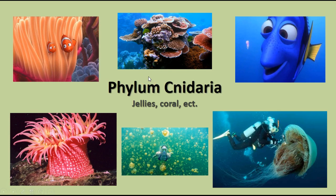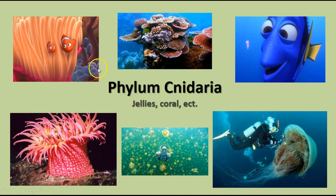The next phylum in complexity would be Phylum Cnidaria — note the word is spelled with a C at the front but we don't pronounce the C. This includes jellyfish, corals, sea anemones, and similar animals. We have pictures here from Finding Nemo because Nemo and Marlin lived in a sea anemone, which is a cnidarian, and here's Dory encountering the jellyfish that began to sting her.